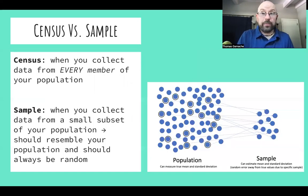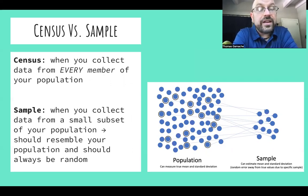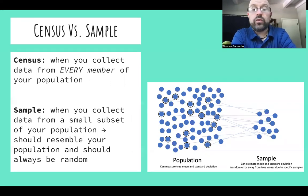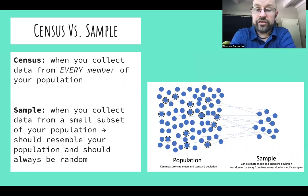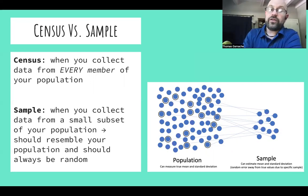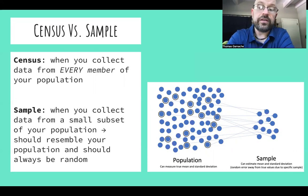When do we want a sample? When we can't perform a census. A census is when you collect data from every member of your population. A sample is when you collect data from a small subset of your population, and it should resemble your population and always be random. In the illustration, we have a lot of dots representing the population, and our sample is randomly selected dots from that population — significantly smaller than our population.